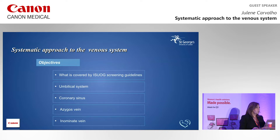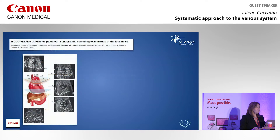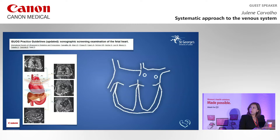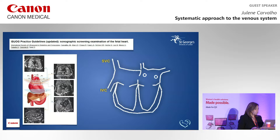This is expanding to some extent the image that you obtain on the routine screening if you are used to following the ISUOG guidelines. You're very familiar with this diagram from the 2013 guidelines, and based on these, there are only parts of the venous system that you expect to see on your routine 20-week scan - the inferior vena cava, the superior vena cava, and the pulmonary veins.